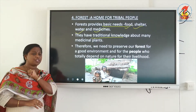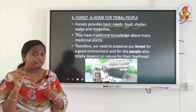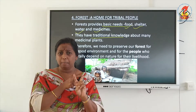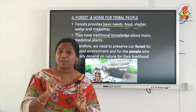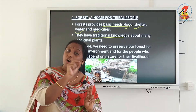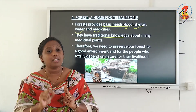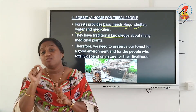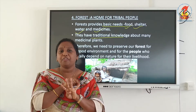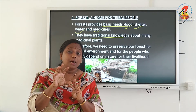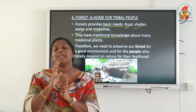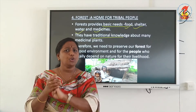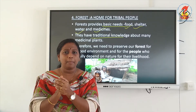So right now we studied four uses of forest. Number one, forest helps in nutrient cycling. Number two, forest helps to regulate the amount of oxygen and carbon dioxide, thereby acting as the green lungs of earth. Number three, forest regulates the water cycle. And number four, forest protects the life of tribal people who are living in the forest.